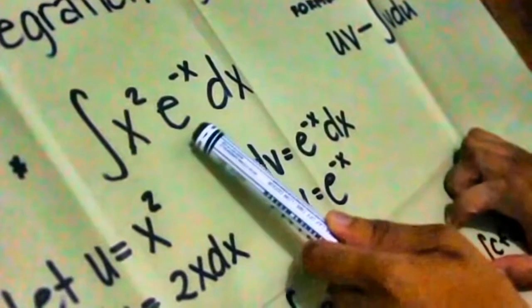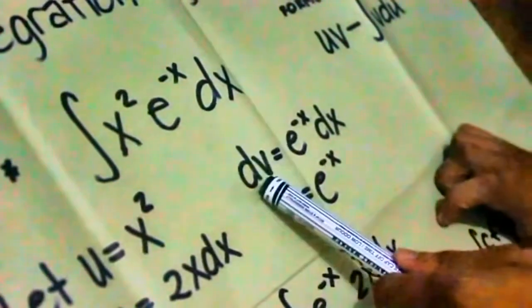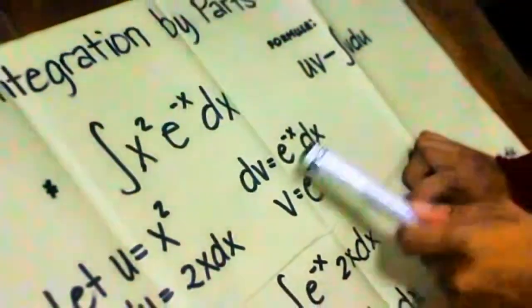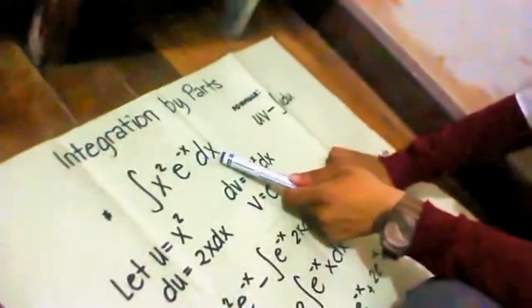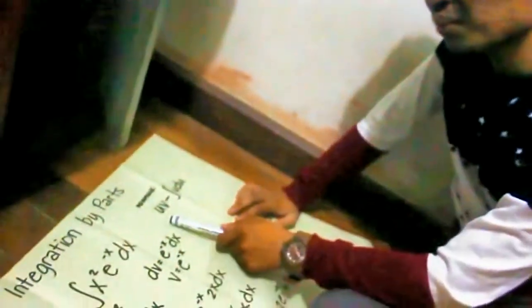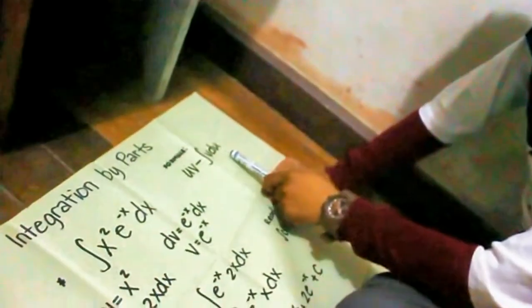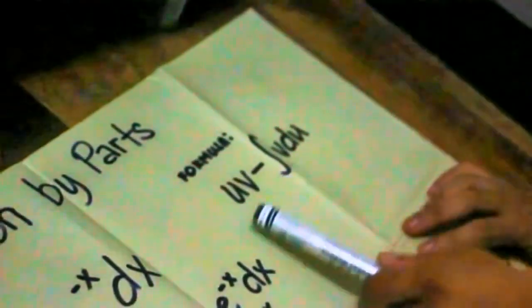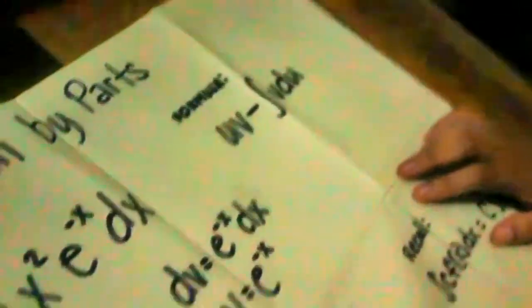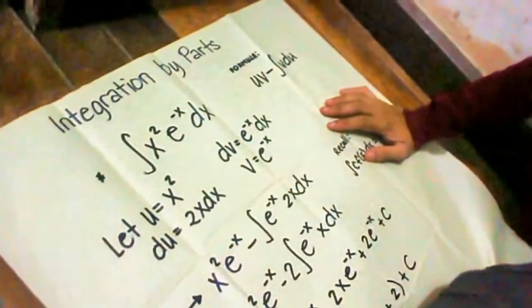Now for our dv: since x squared is our u, our dv is e to the negative x dx. Since this is our dv, our v is e to the negative x. So we already have all the expressions to be substituted into the formula: u, v, and v du.